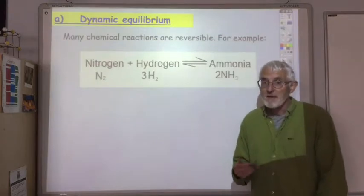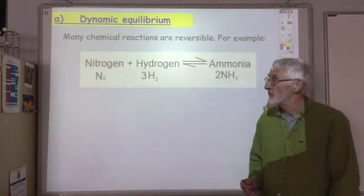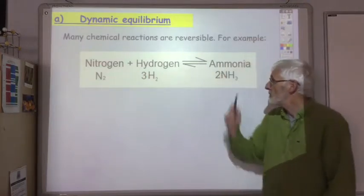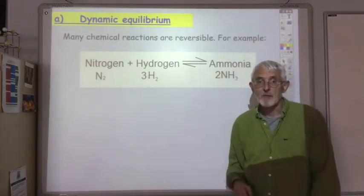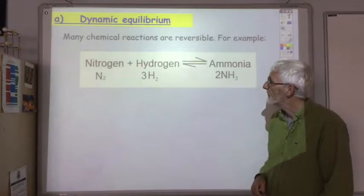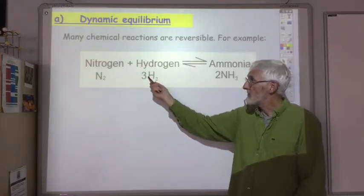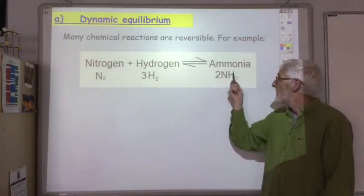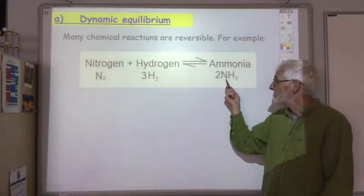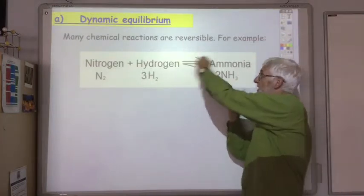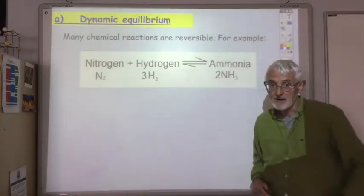Now, many chemical reactions are reversible. For example, the reaction between nitrogen and hydrogen to make ammonia is a classic example of a reversible reaction. Which means that all the time that nitrogen and hydrogen are combining to produce ammonia, the ammonia is breaking down to give you nitrogen and hydrogen. So the reaction is going both ways at the same time.